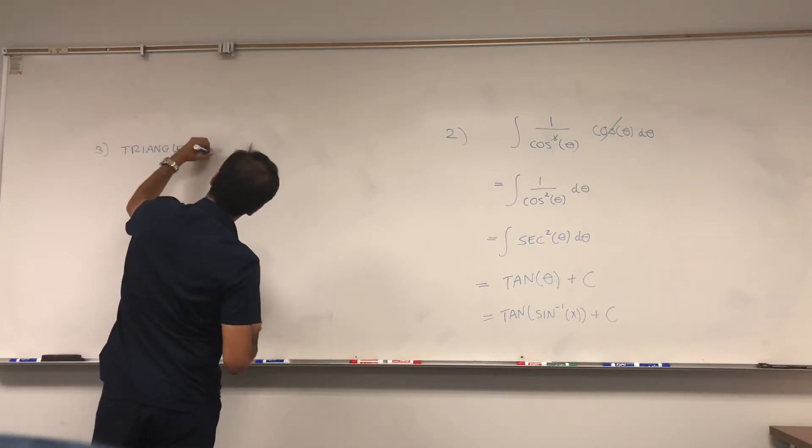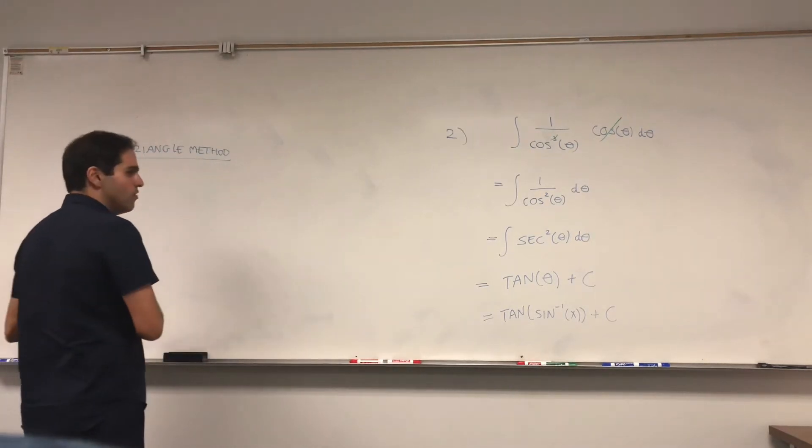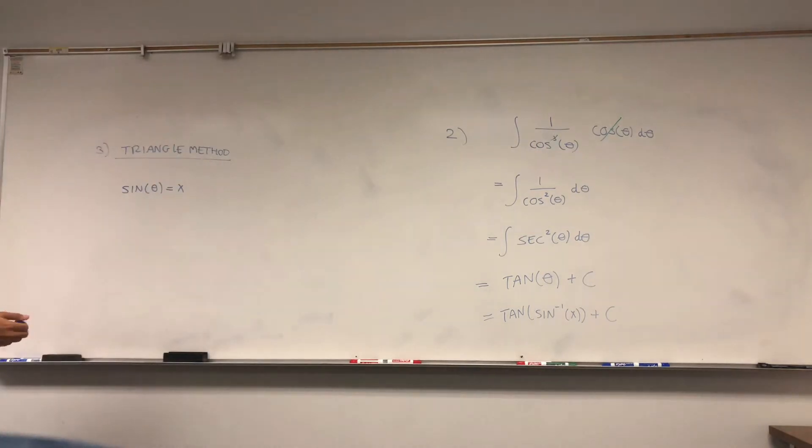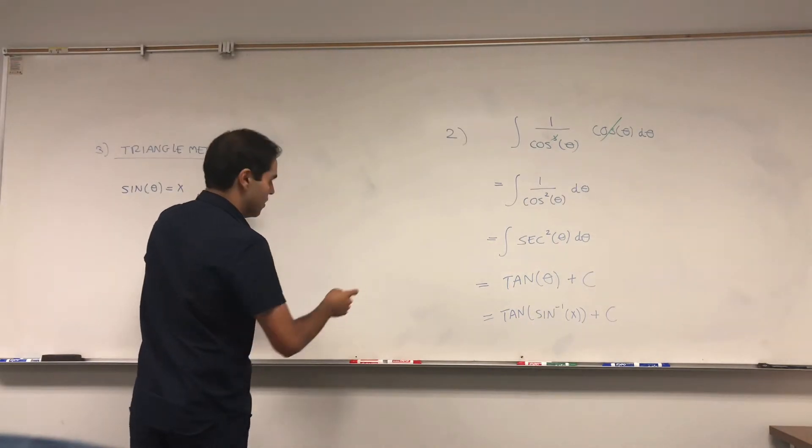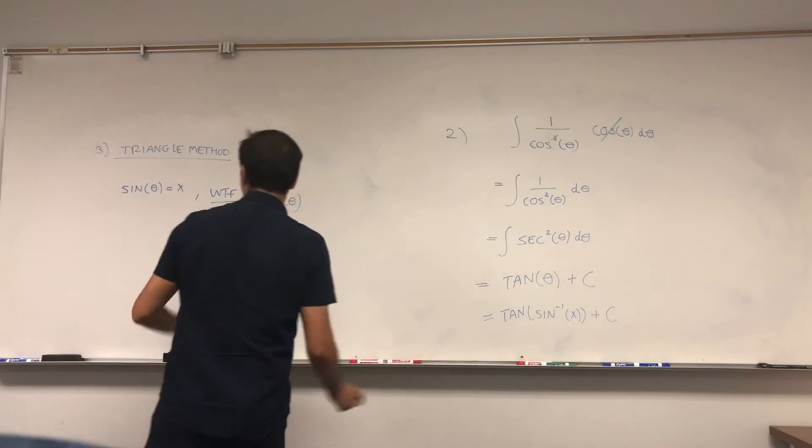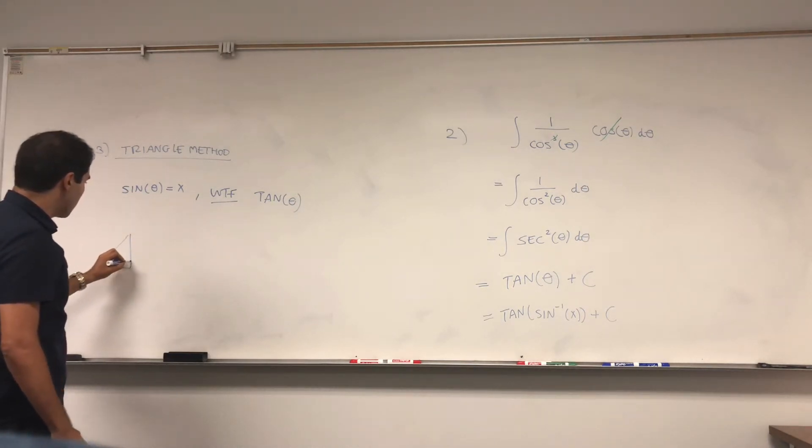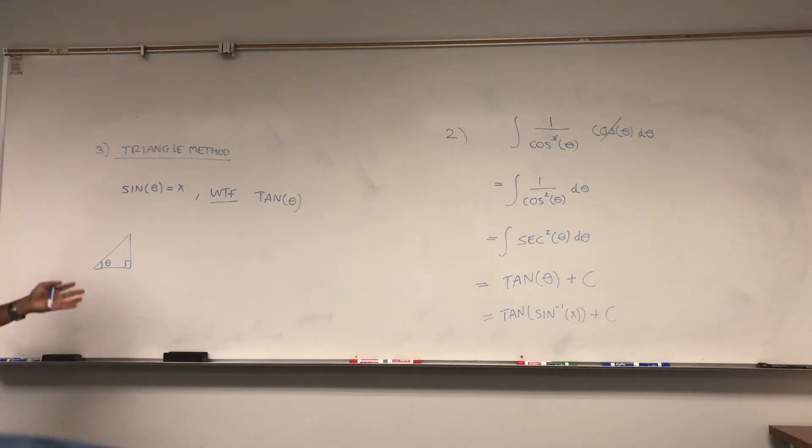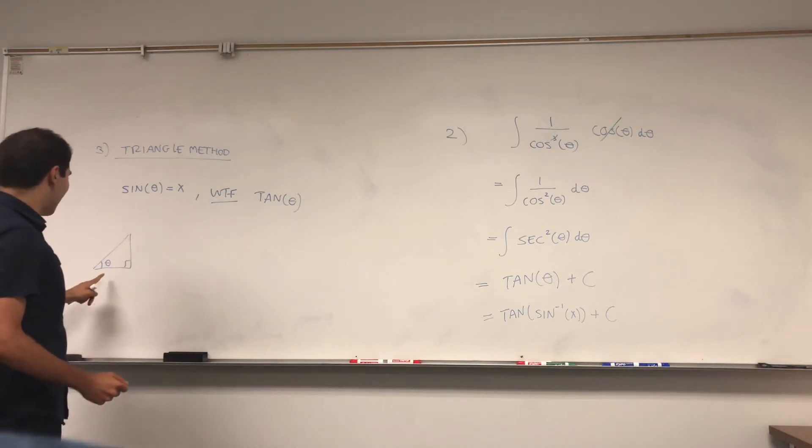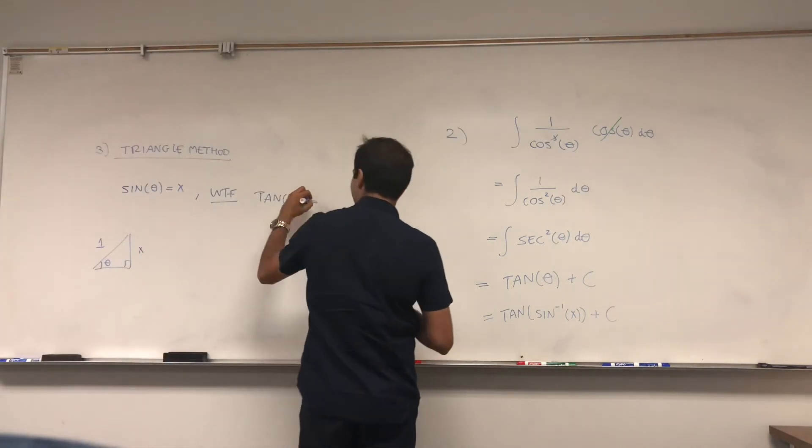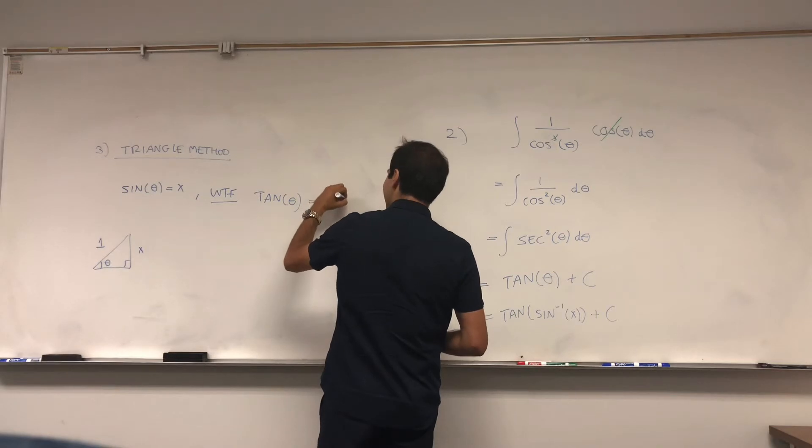Alright, so what did we have? Remember we had sine of theta equals x, and we want to find tangent of theta. Since sine of theta equals x, find the easiest triangle you can think of with the property that sine of theta equals x. Remember, SOH CAH TOA—sine is opposite over hypotenuse. If you let that be x and let that be 1, then sine of theta is x over 1, which is x. Now we want to find tangent of theta, which is opposite over adjacent.